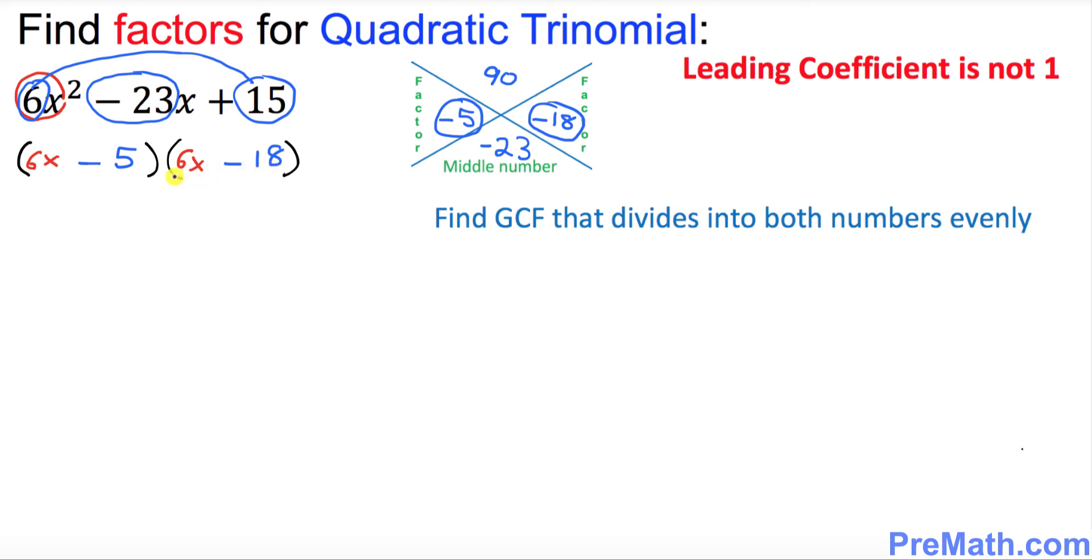Obviously that number's gonna be 6. So divide both by 6. The second parentheses is gonna become simply (x - 3), and the first parentheses just leave it like this: (6x - 5).